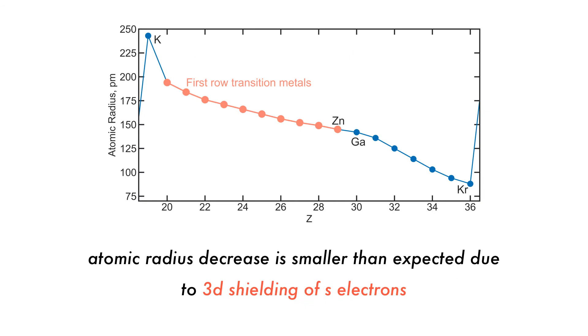Some trends in the d-block include an expected decrease in atomic radius as effective nuclear charge increases, but because the atomic outer s electrons are shielded by 3d electrons, only a small increase in the effective nuclear charge occurs. Hence, the contraction in size is much smaller than observed for s- or p-block elements.